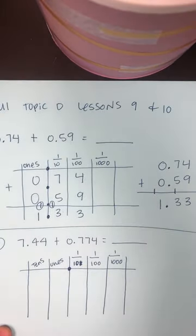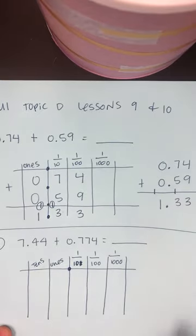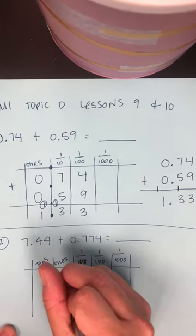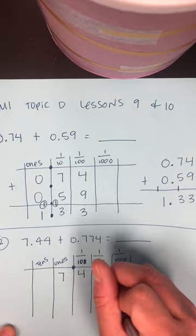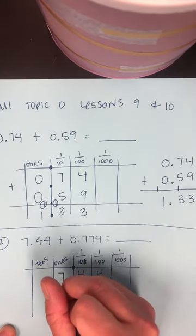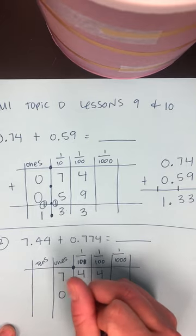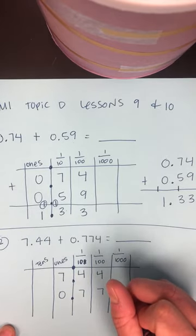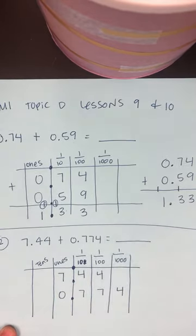So, once you have them on your place value chart, you'll quickly notice that we have seven ones, four tenths, four hundredths in our first number. And our second number, we have zero ones, seven tenths, seven hundredths, and four thousandths.